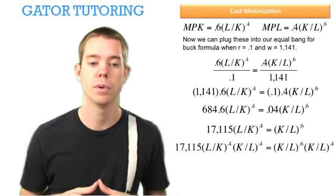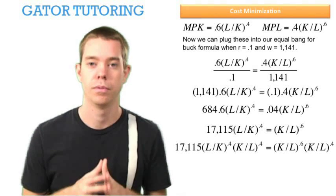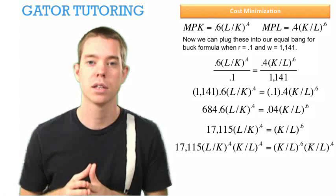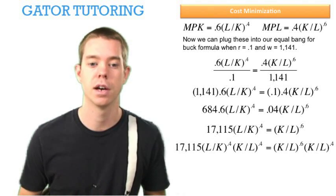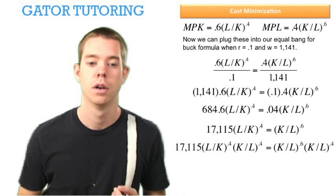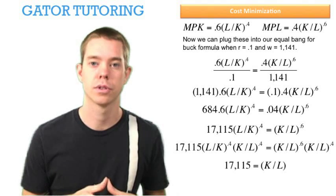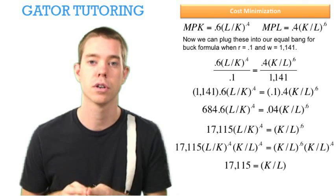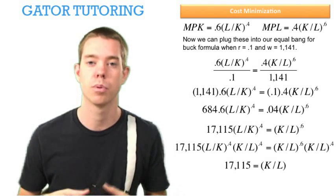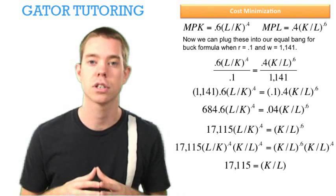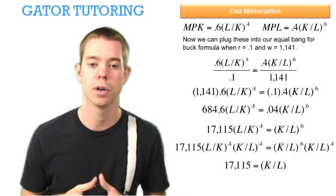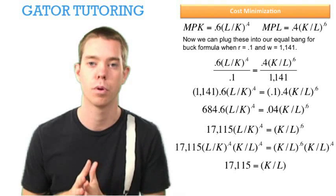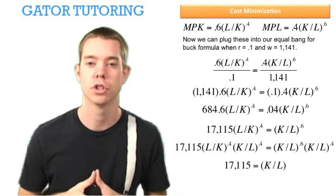On the left side, this cancels out. On the right side, something nice happens. We have K^0.6 in the numerator multiplied by K^0.4 in the numerator, which gives us K because we add those exponents. 0.6 plus 0.4 equals 1, which is just K.